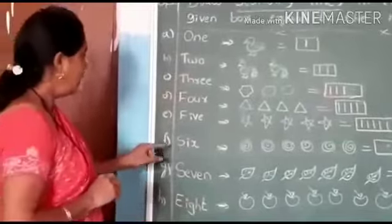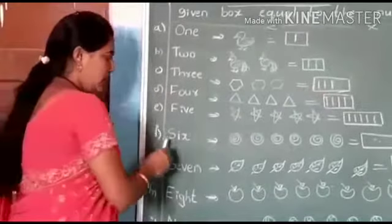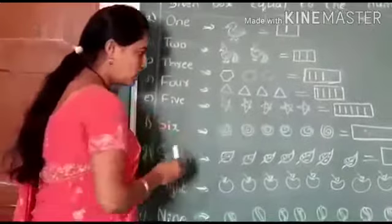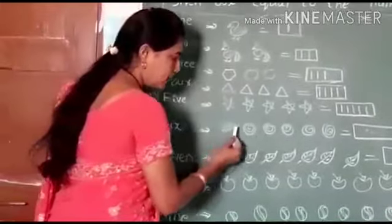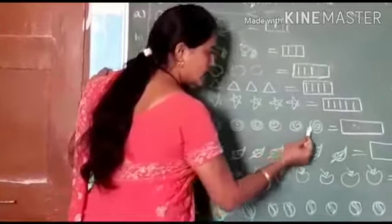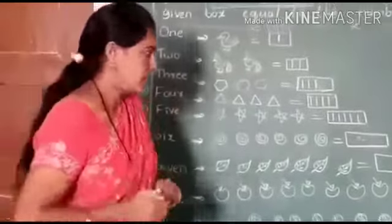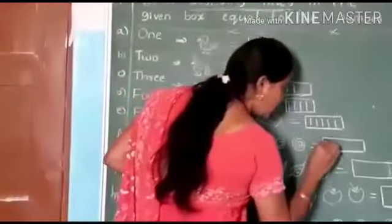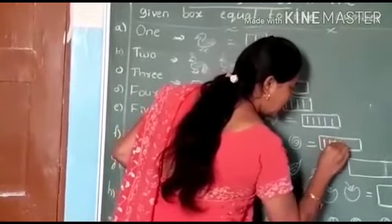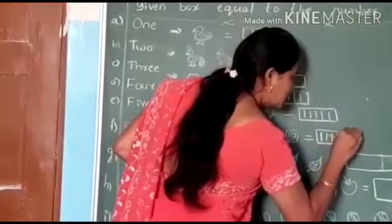Next — S-I-X, 6. Number is six. How many objects are counted? One, two, three, four, five, six. Six objects are there. So we will draw here one, two, three, four, five, six standing lines.